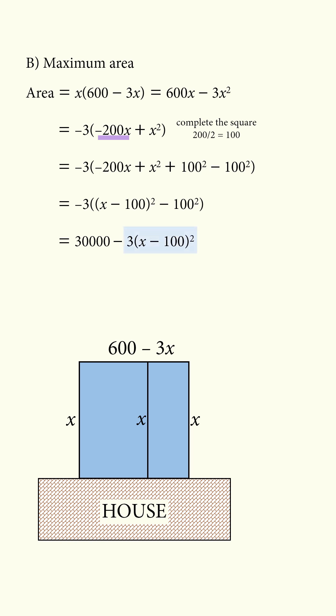Now we're subtracting 3 times a square term, so we minimize the square term, which happens at x equals 100, and so the maximum area will be 30,000.